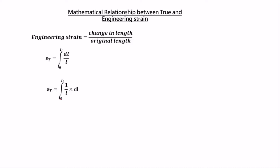Applying integration, 1/L integrates to ln(L), evaluated from L₀ to L_i. This gives ln(L_i) minus ln(L₀). Applying the logarithm subtraction rule, this becomes ln(L_i/L₀). So the true strain equals the natural log of the instantaneous length over the original length: ε_true = ln(L_i/L₀).